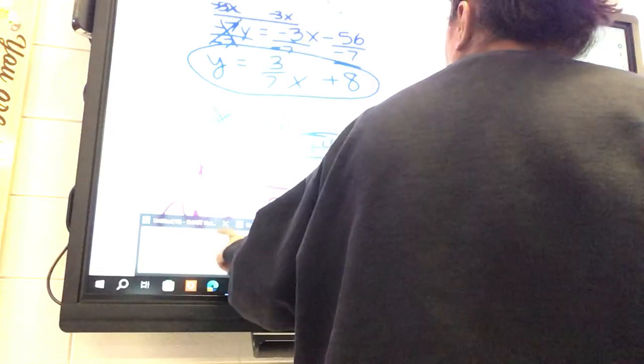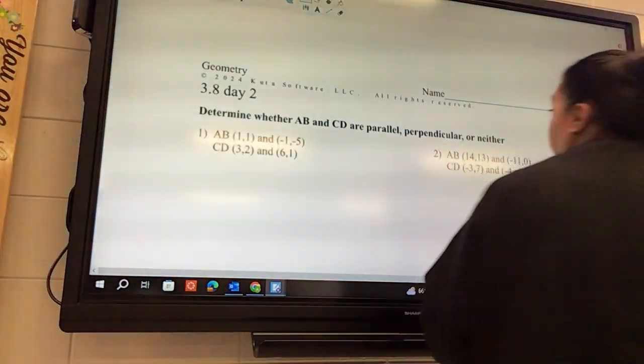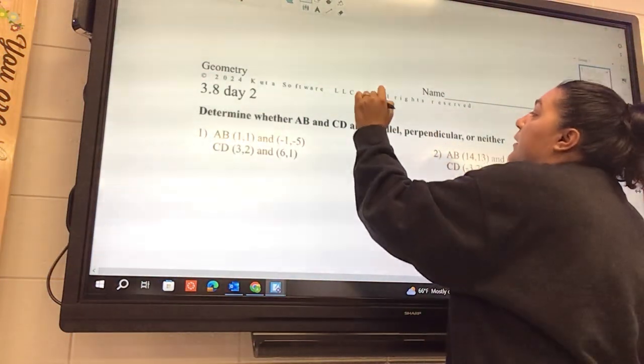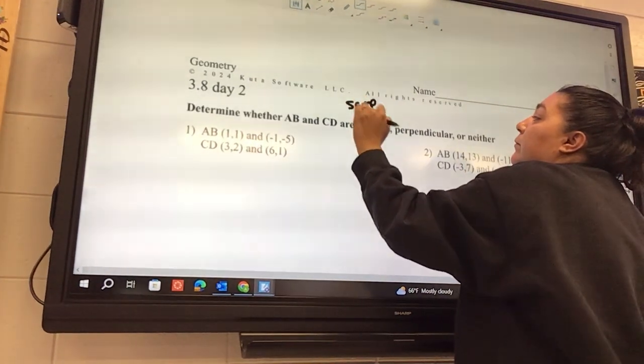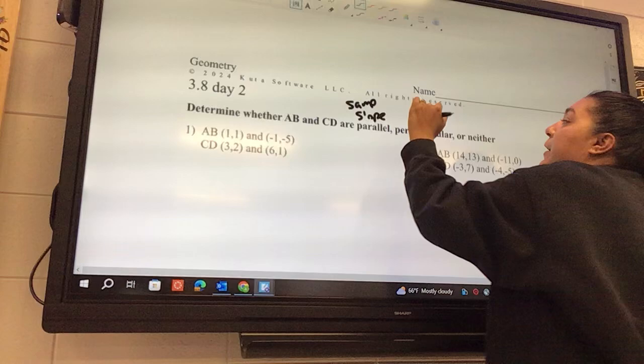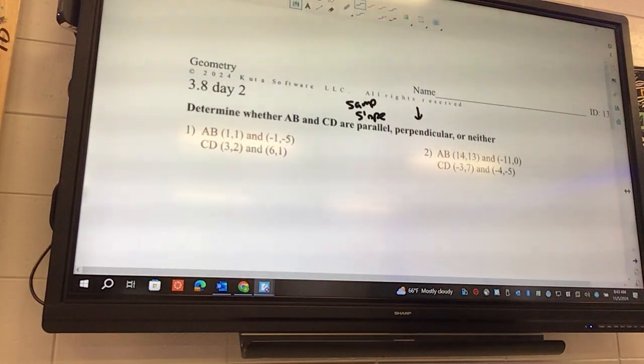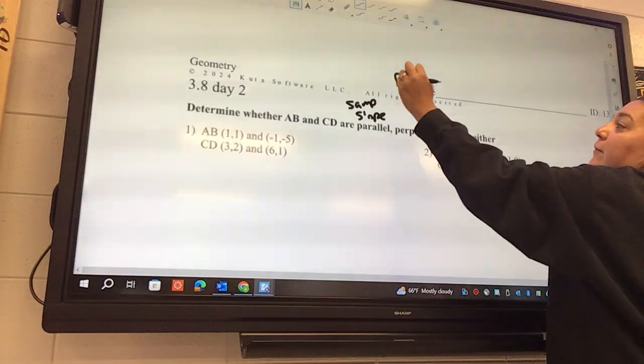If it's parallel, how do you know if it's parallel? The slopes are the same, so we got the same slope. How do we know if it's perpendicular? We're gonna flip and change.